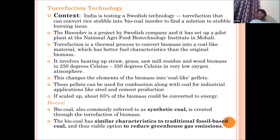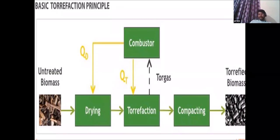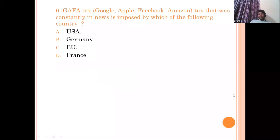Bio coal is a synthetic coal created through the torrefaction of biomass — heating raw biomass at 250 to 360 degrees Celsius in very low oxygen. The resulting bio coal has similar characteristics to traditional coal but reduces greenhouse gas emissions. The process goes: untreated biomass is dried, then torrefaction occurs, then it is compacted and compressed into the final certified biomass product. India is testing this Swedish technology to convert rice stubble into bio coal.